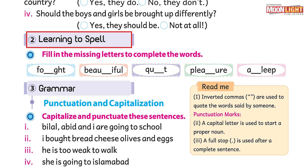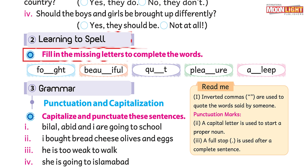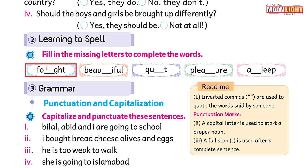Now it's time to move to our second category: learning to spell. We have been given some words that are not completed because some letters are missing. Let's observe which letter is missing. The first word is beautiful — you can see that the 't' is missing. When I say beautiful, the 't' sound is there but not written.